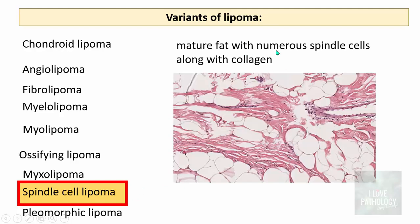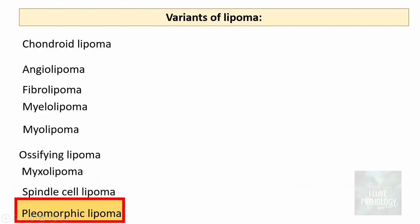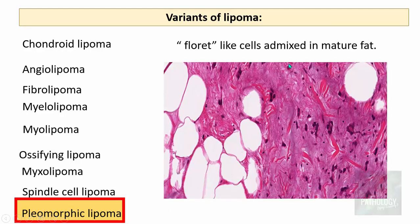Spindle cell lipoma contains mature fat with numerous spindle-shaped cells and lots of collagen in between. Pleomorphic lipoma, despite the name, does not indicate malignancy. It is a lipoma in which you find cells with nuclei arranged in floret-like cells, with spindle-shaped cells and ropey collagen in the background, all mixed with mature fat.